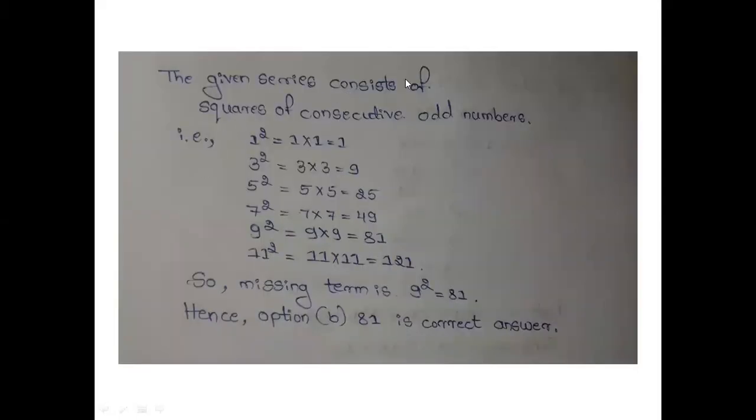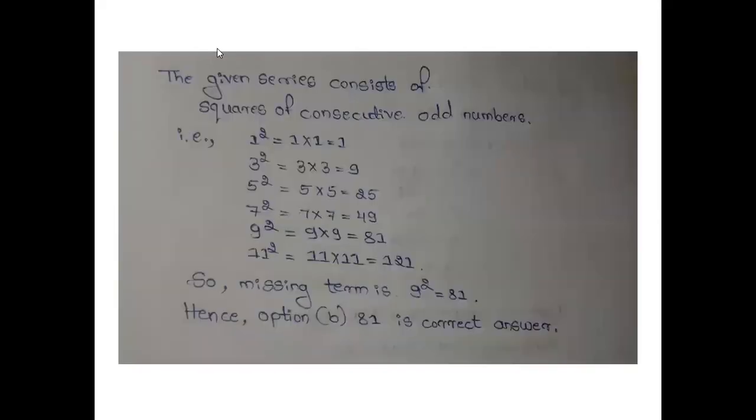The given number series consists of the squares of consecutive odd numbers. That is 1 square equals to 1, 3 square equals to 9, 5 square equals to 25, 7 square equals to 49, 9 square equals to 81, and 11 square equals to 121.